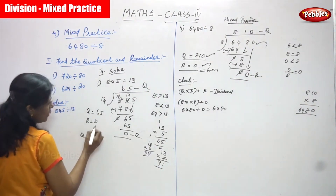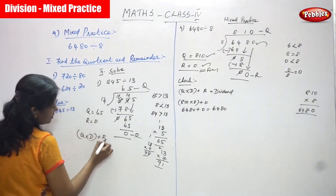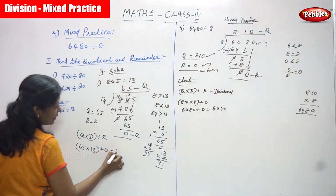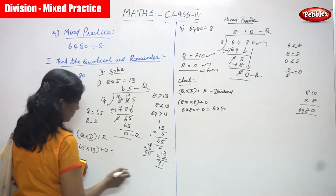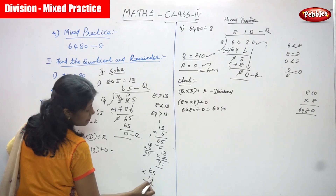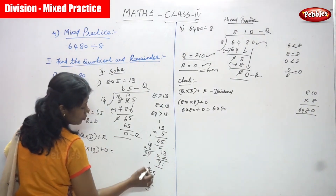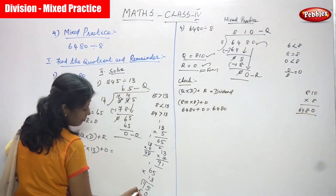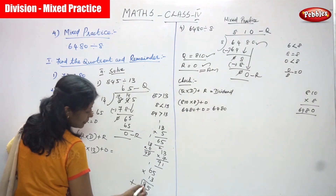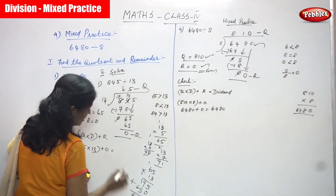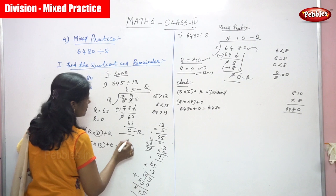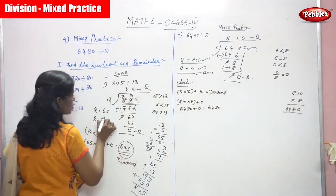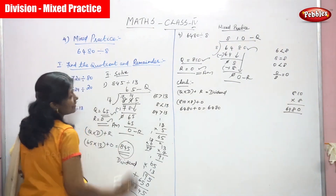Check method: quotient into divisor plus remainder equals dividend. Quotient is 65 and divisor is 13, plus remainder 0. You have to multiply 65 into 13. Multiply by ones place: 5 threes are 15, carry 1; 6 threes are 18 plus 1 is 19. Then multiply by tens place: put 0, 1 five is 5 and 1 six is 6. Add: 9 plus 5 is 14, carry 1; 6 plus 1 plus 1 is 8. So 845 — that is the dividend. Whatever you found for the quotient and the remainder, both are exactly the right answer.